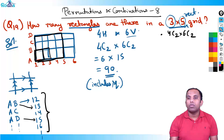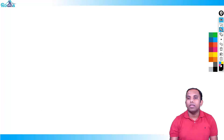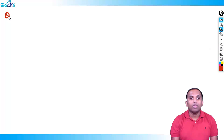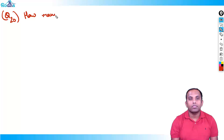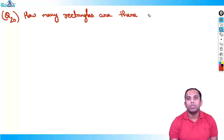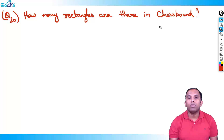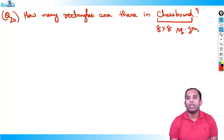This is the way you should study — sequentially working through quality questions. We've gone from question 1 to question 19, discussing very high quality questions that will build your IQ level. Now question 20: how many rectangles are there in a chess board?